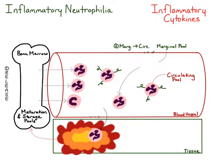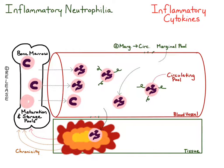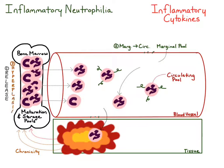If this inflammation persists — if it undergoes chronic inflammation with persistent release of inflammatory cytokines — that signal reaches the bone marrow and tells it to undergo neutrophilic hyperplasia. So a third mechanism, occurring with chronic inflammation, is increased production of neutrophils in the bone marrow and therefore increased release of neutrophils from the bone marrow.